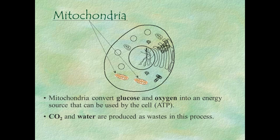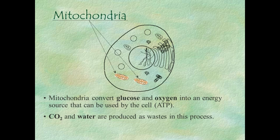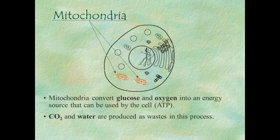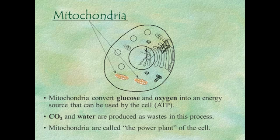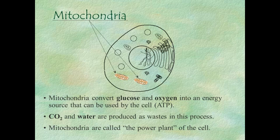Along with ATP, carbon dioxide and water are produced as wastes in this process. To be clear, mitochondria use oxygen along with glucose to produce ATP — the energy currency the cell uses — and the waste products are carbon dioxide and water. We often call them the power plant of the cell, but that definition alone will not be sufficient to get you where you want to go in this class.